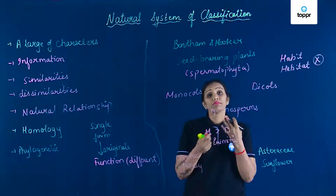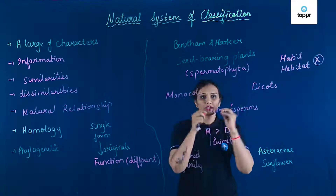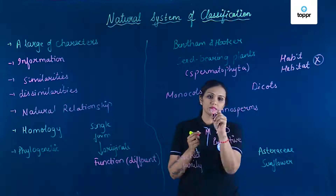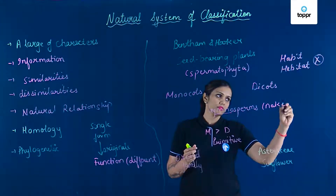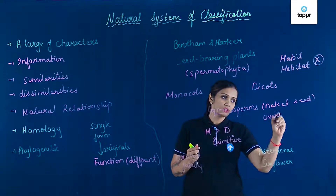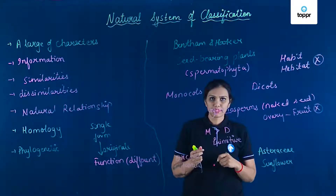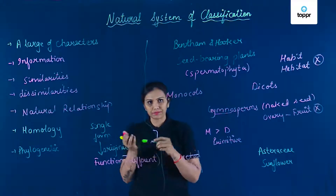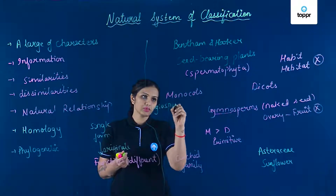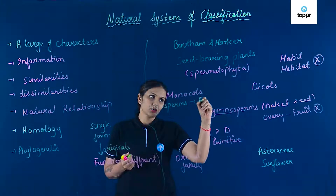But iska demerit kya hai? Gymnosperm ko usne monocot or dicot ke beech mein rakh diya. Jabki major difference humein pata hai ki gymnosperms naked seed-bearing plants hain. In ke andar ovary absent hoti hai, so the fruit will also be absent. Jabki angiosperms ke andar — jo ki monocots and dicots hain — yeh covered hain, ovary present hai, aur yahan pe fruit form hoga.